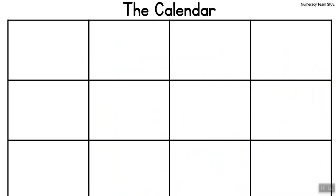Now, here we are seeing an empty calendar. Really and truly there is nothing in it — it's just a bunch of empty boxes. So, can anyone tell me what a calendar is? What would a calendar show us? Yes, the calendar would show us a whole year or even a month on its own.